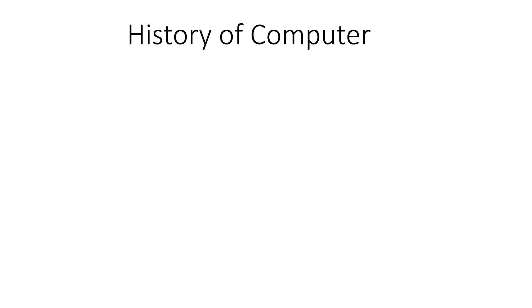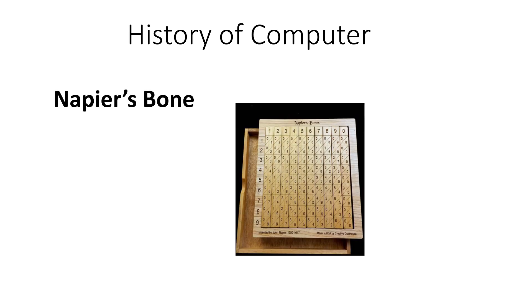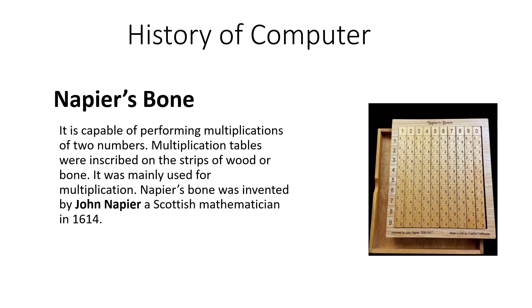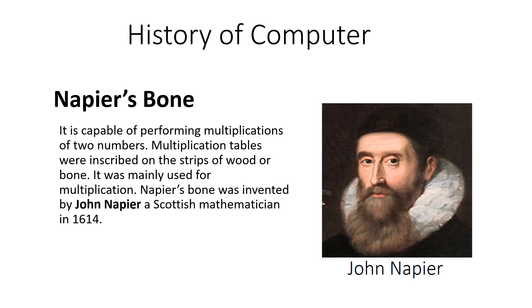Another calculating device is Napier's Bones. Napier's Bones is a calculating device that was able to perform multiplications of two numbers. Multiplication tables were inscribed on the strips of wood or bone. It was mainly used for multiplications and it was developed by John Napier, a Scottish mathematician, in 1614.